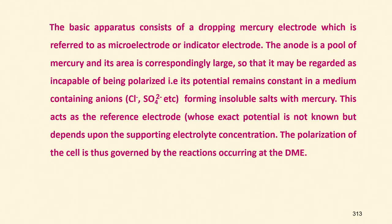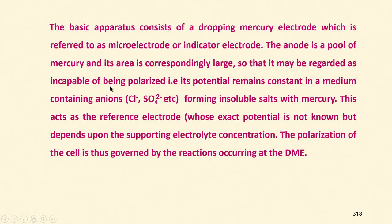The basic apparatus consists of a dropping mercury electrode, which is referred to as the micro electrode or indicator electrode. The anode is a pool of mercury, and its area is correspondingly large so that it may be regarded as incapable of being polarized — meaning its potential remains constant in a medium containing anions.